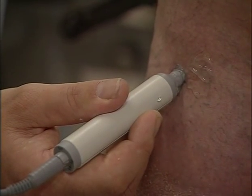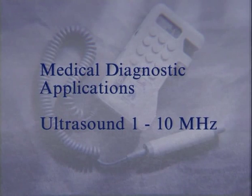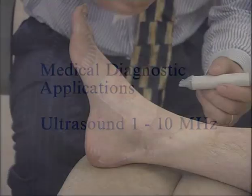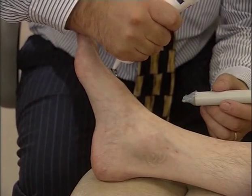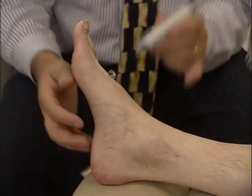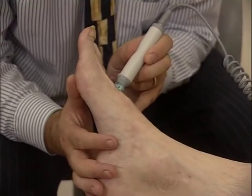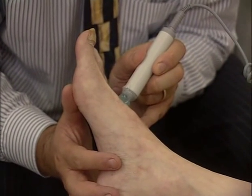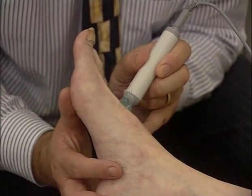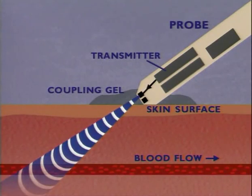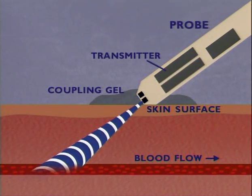Doppler probes produce ultrasound signals typically between 1 and 10 megahertz. This is outside the upper limit of the normal hearing range. Ultrasound passes easily into the body but not through air, so a water-based coupling medium is used. When the ultrasound signal encounters blood cells moving in a vessel, some of the signal is reflected at a Doppler shift frequency related to the speed of the blood cells.